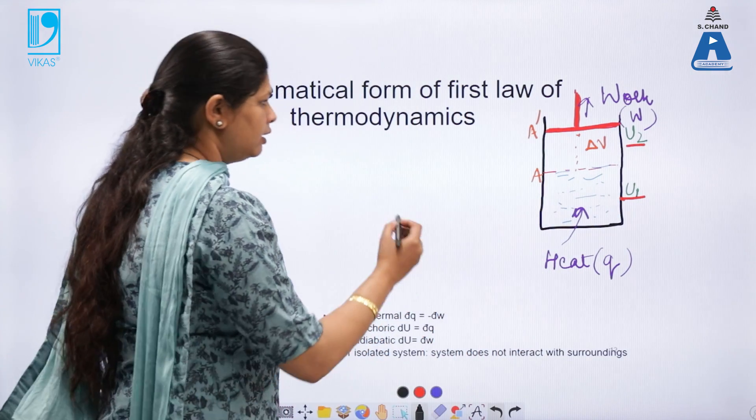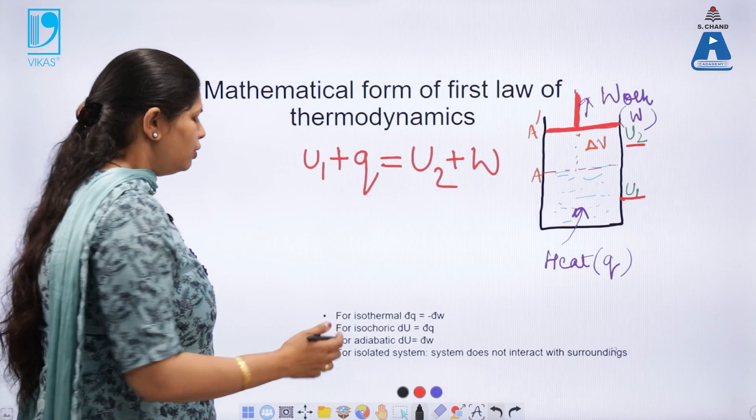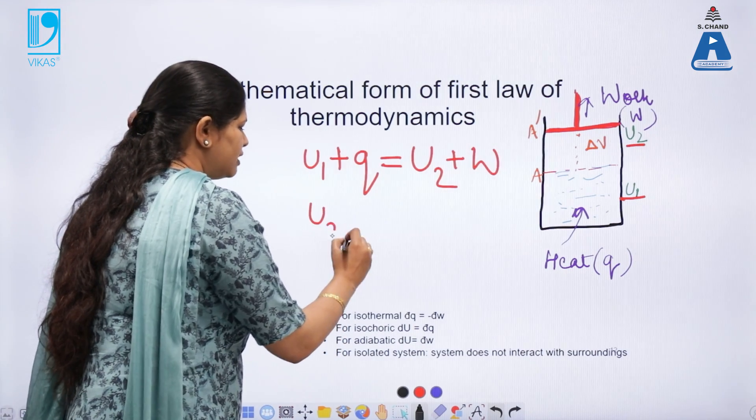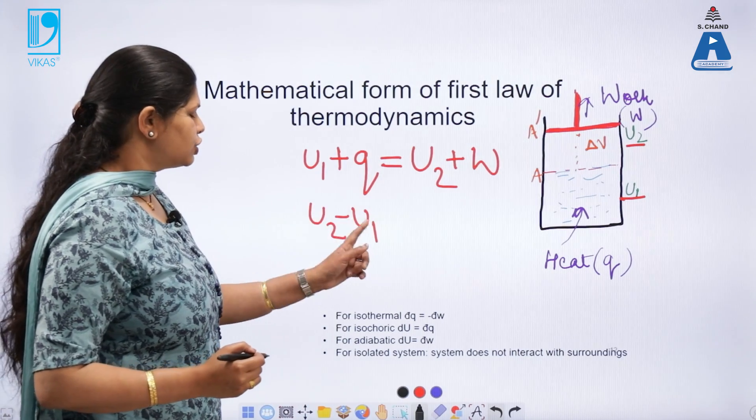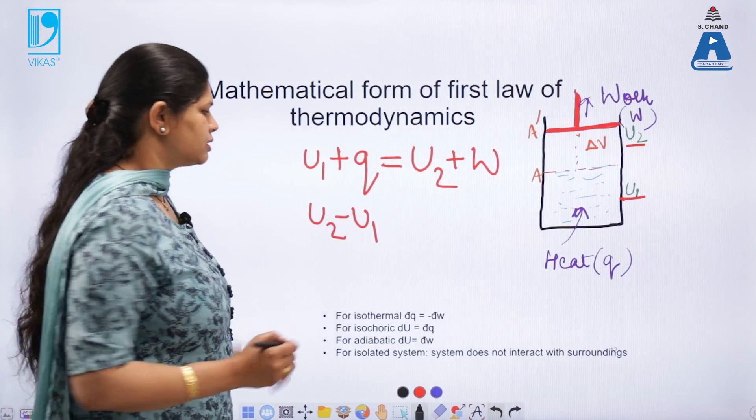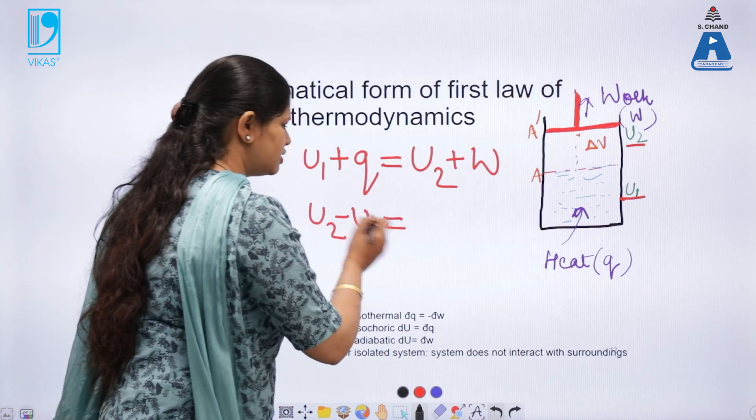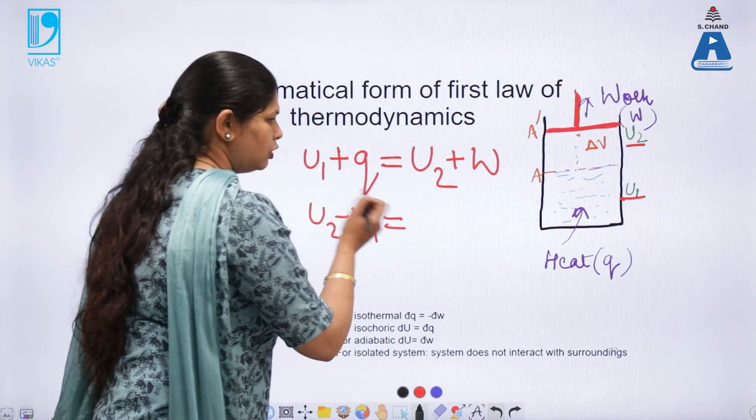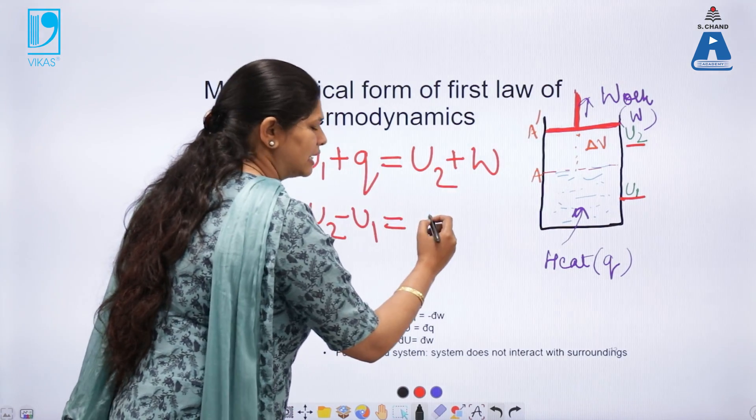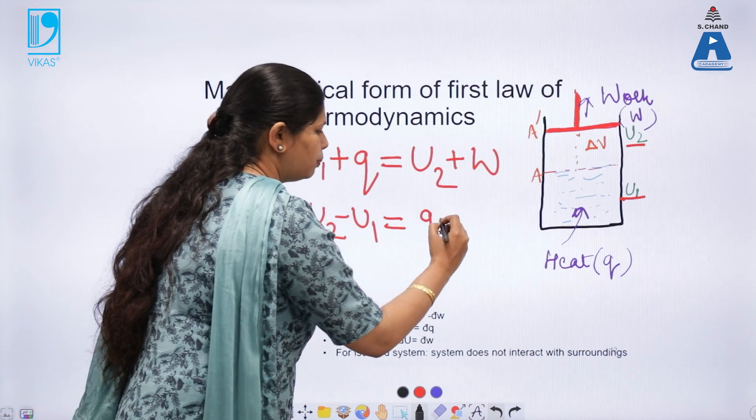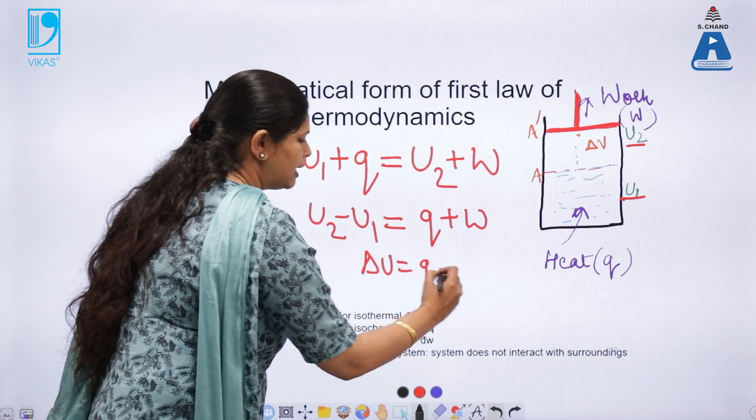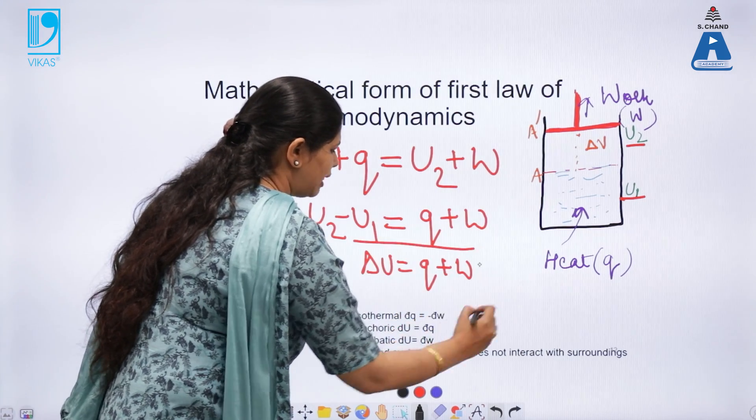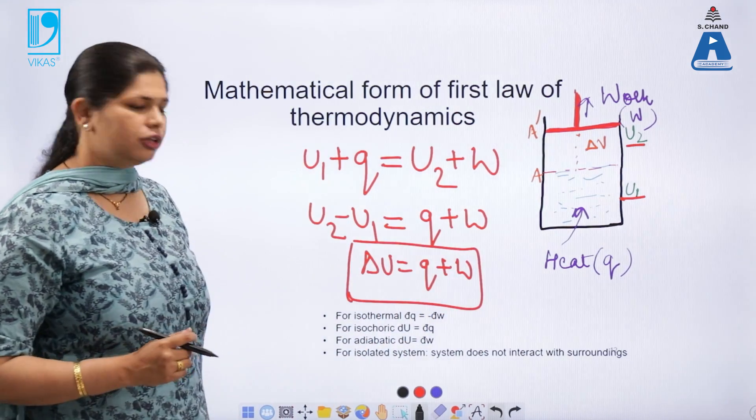So, for a state function, we write, so if I take U2 minus U1, that is the difference between the initial and the final state as U is my state function. I am only considering this, not the path by which the state has been achieved. It is Q plus W. So, delta U is equal to Q plus W is the mathematical form of first law of thermodynamics.